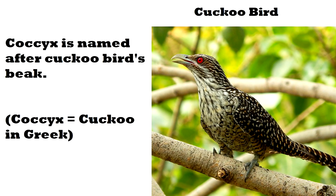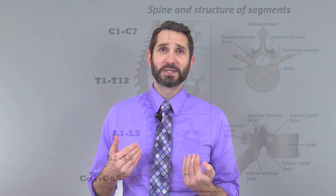Now why do anatomists call this bone the coccyx? Because it has a triangular pointed shape, it was actually named after the cuckoo bird's beak. In fact the word coccyx literally means cuckoo in the ancient Greek language — so this bone is cuckoo for cocoa puffs, kind of like me.